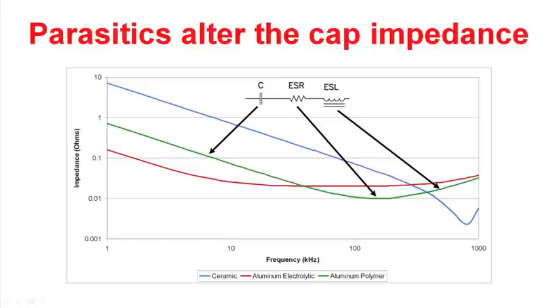For the ceramic, we see that its impedance is much higher than the other two capacitors at frequencies up to around 500 kilohertz. And then above 500 kilohertz, the impedance of the ceramic capacitor is much lower. And that means it will be a much better filter element in this frequency range.